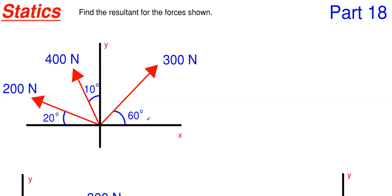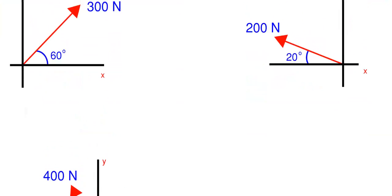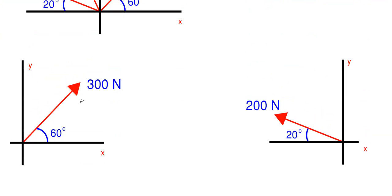The first step is to isolate out each of your components. The better you get with these types of problems, the faster you can work through them and skip a few steps. What I'm going to do is pull out each of these forces and isolate them along the XY system with their angle shown, and look at them each by themselves — the 300, the 200, and the 400 force. We're going to break up each component into its own component forces along the Y and X directions.